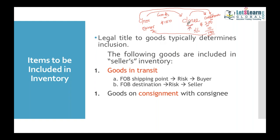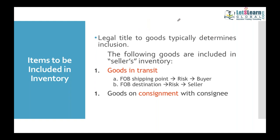The consignee works for commission only. Unsold goods can be sent back to the consignor when the contract ends, but the ownership is never transferred to the consignee. So even though the goods are with the consignee, ownership remains with the consignor.